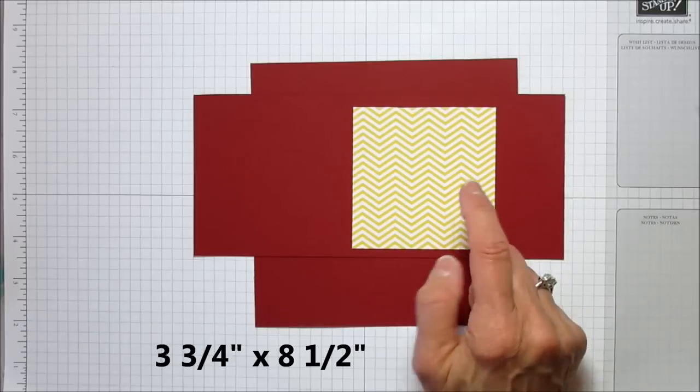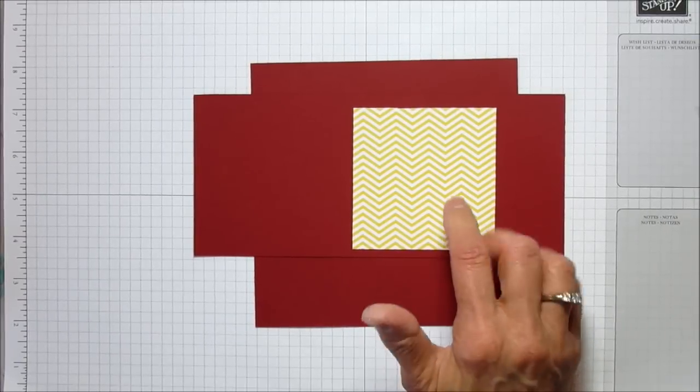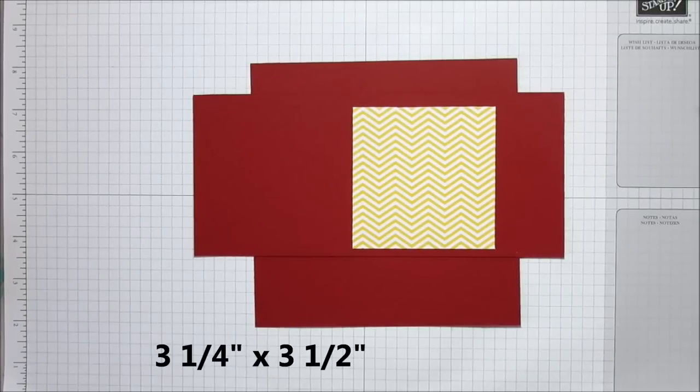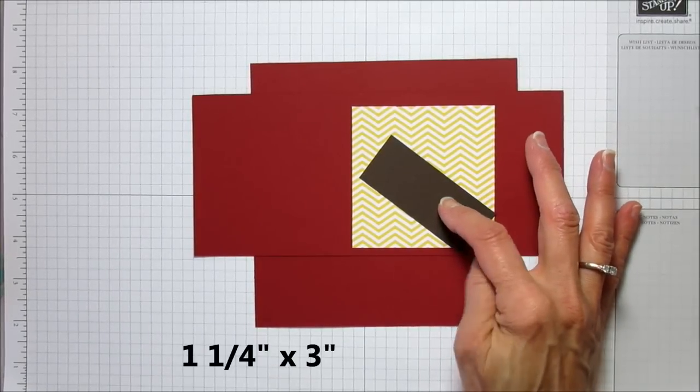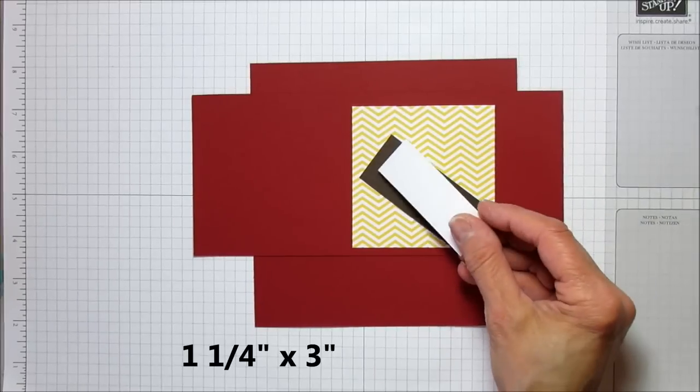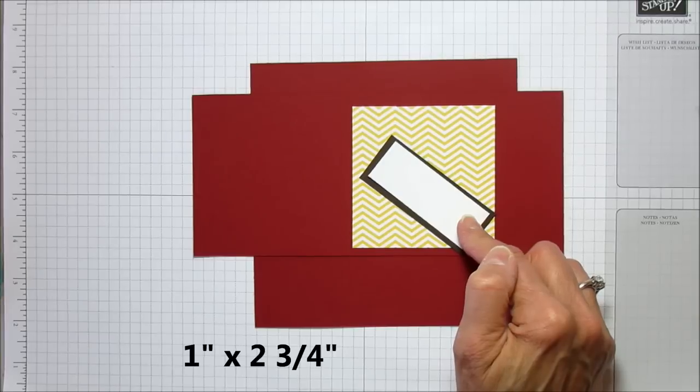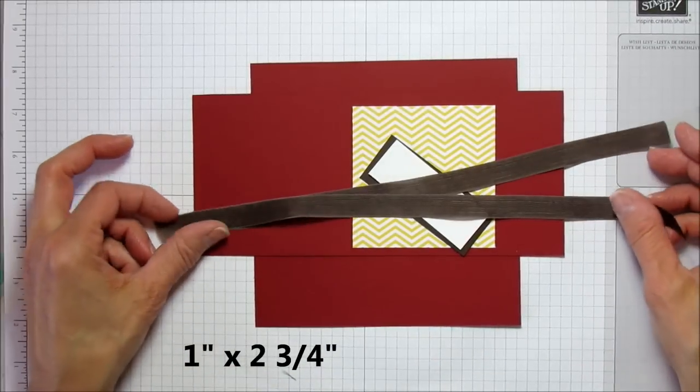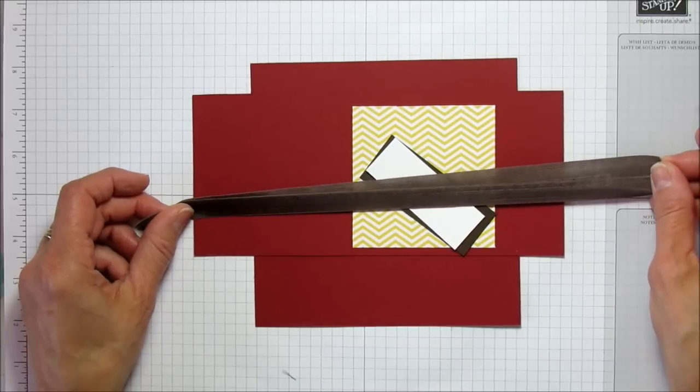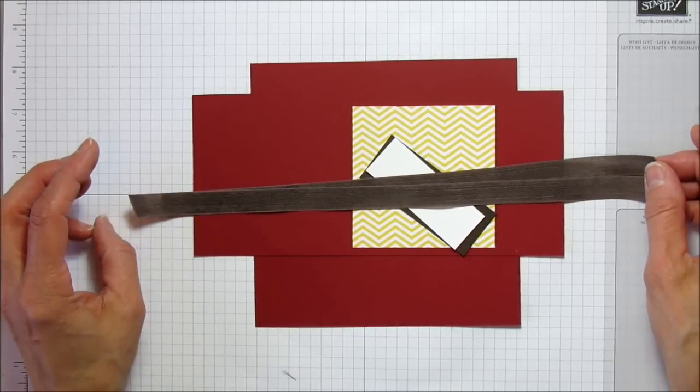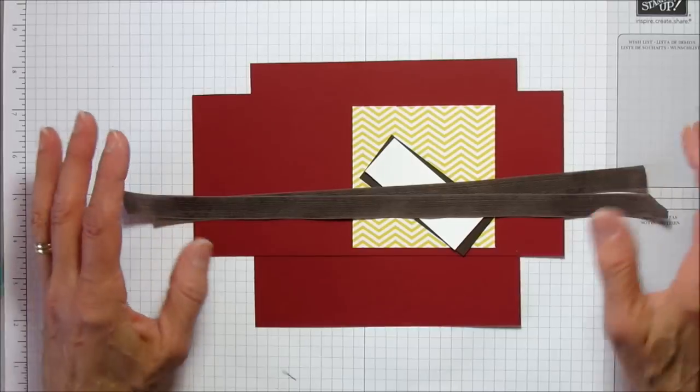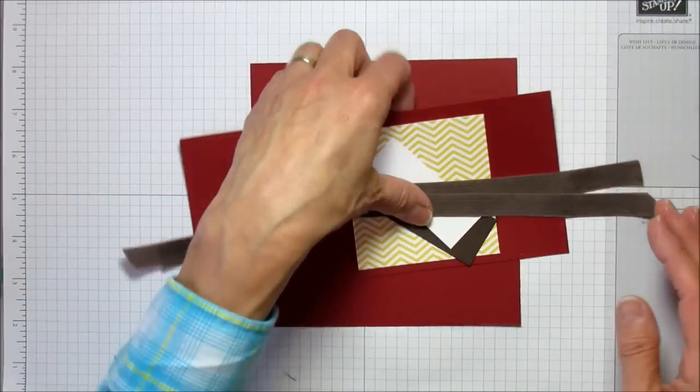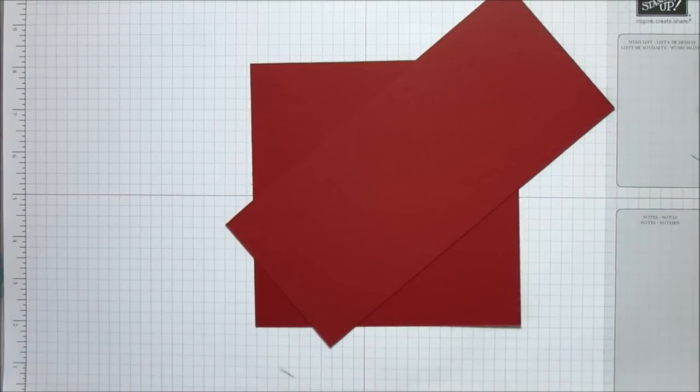You'll need a piece of mat - this is designer series paper in daffodil delight, 3½ by 3¼. For the sentiment, I'm backing it up with early espresso at 1¼ by 3. The sentiment is whisper white, 1 by 2¾. You'll need two pieces about 10 inches of early espresso seam binding ribbon, designer vintage faceted buttons for the flower, and another scrap of designer series paper to create your flower.